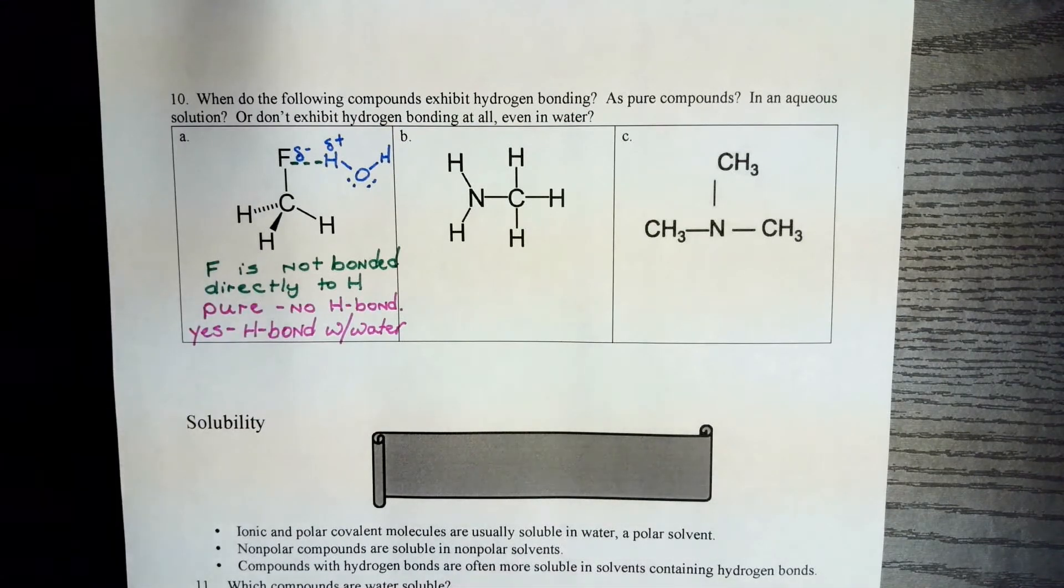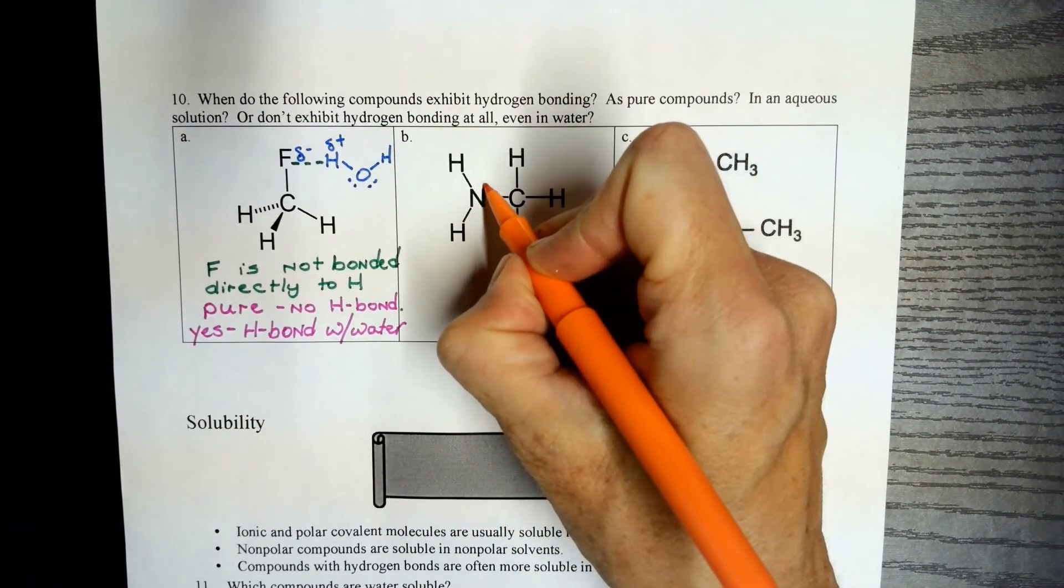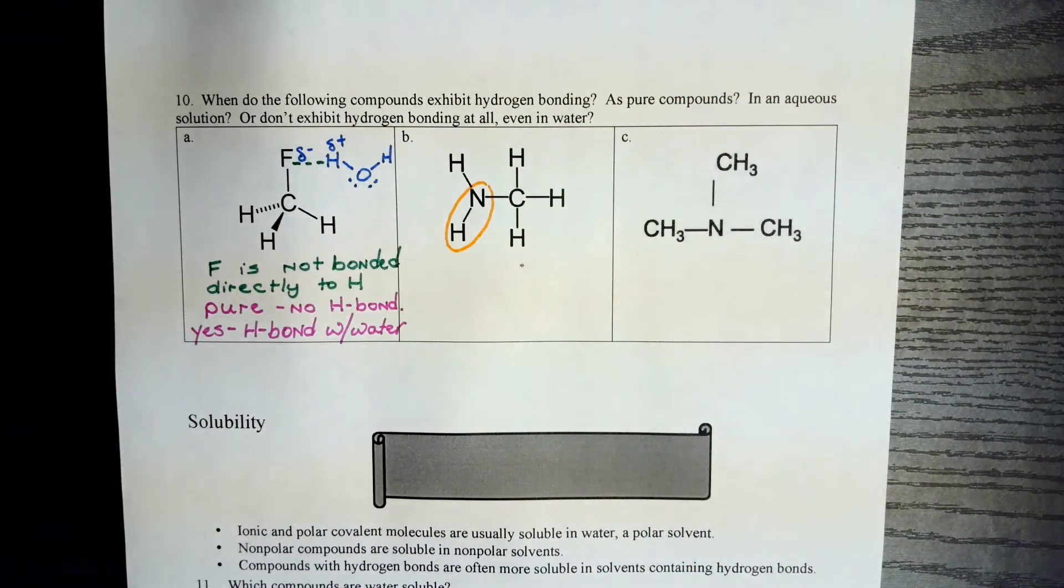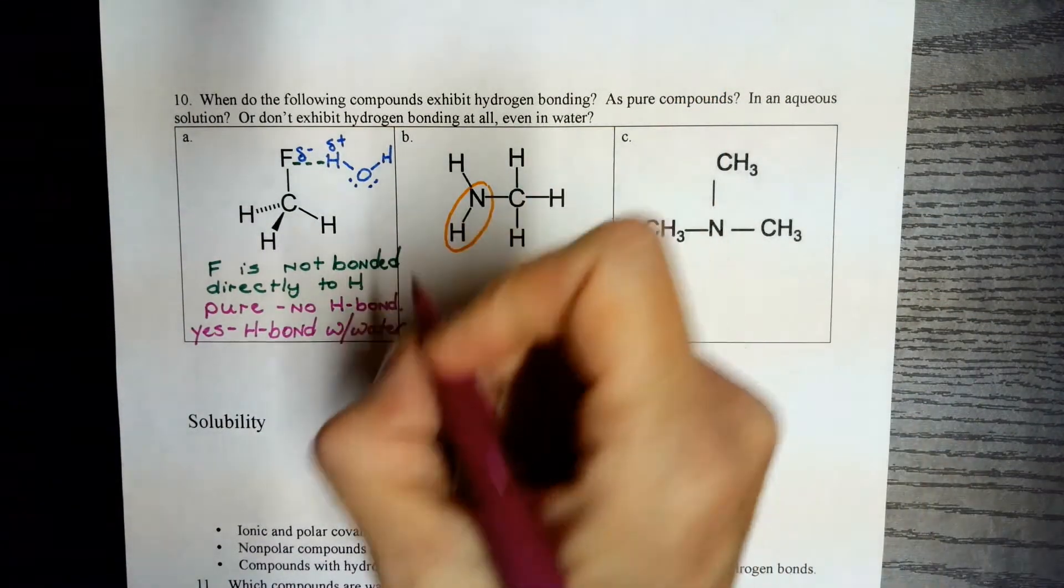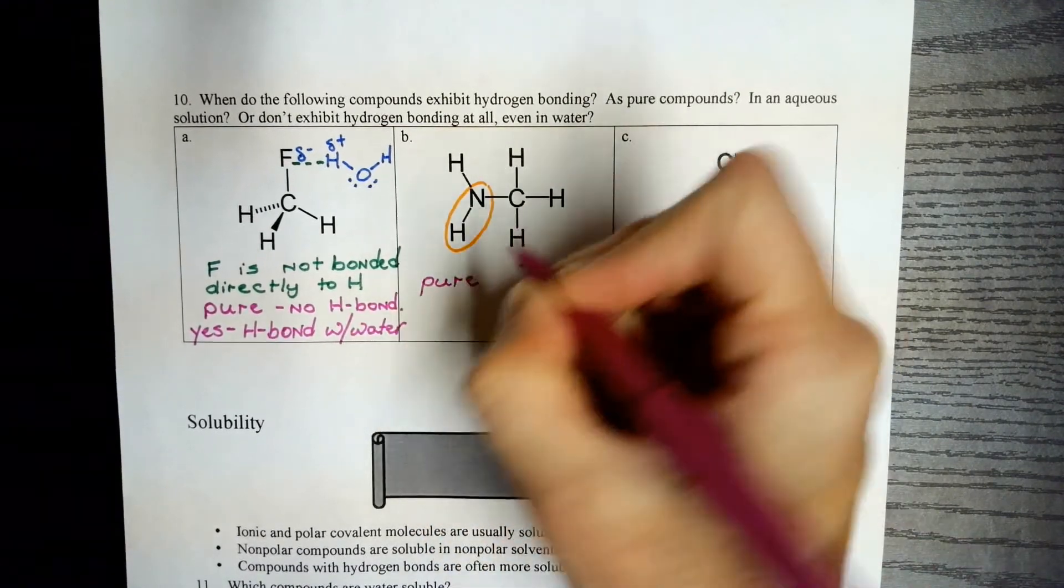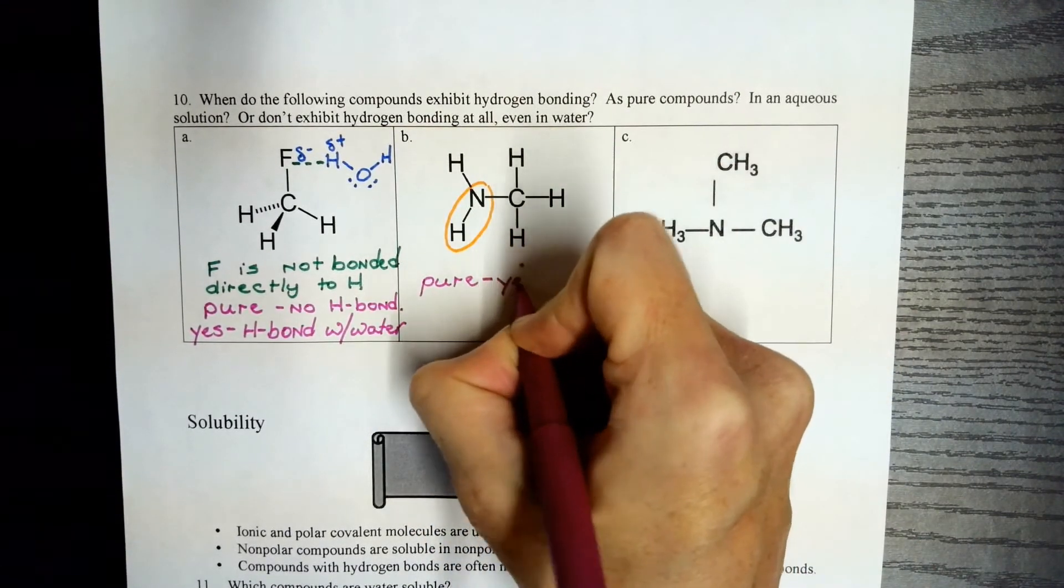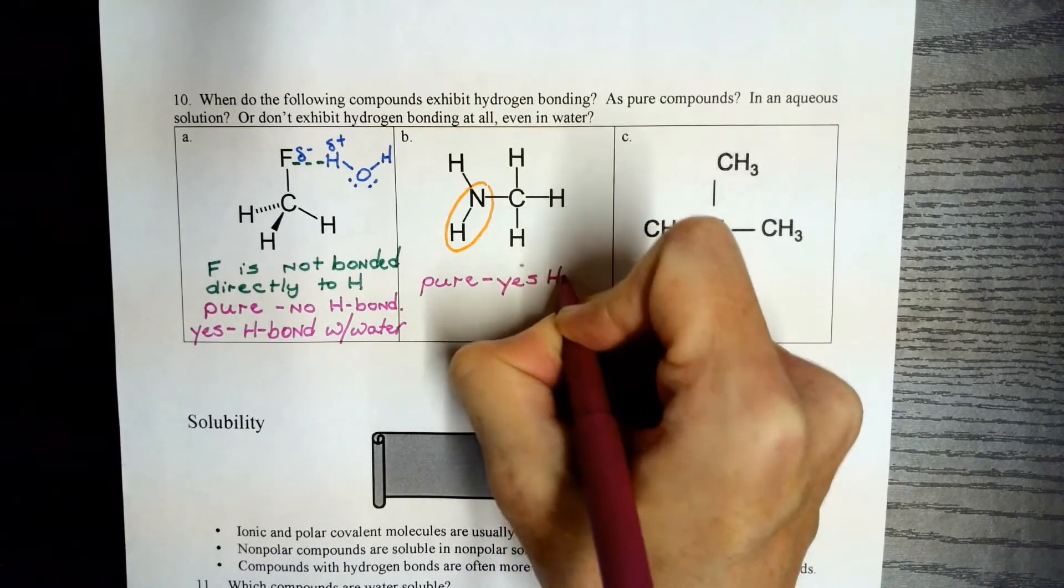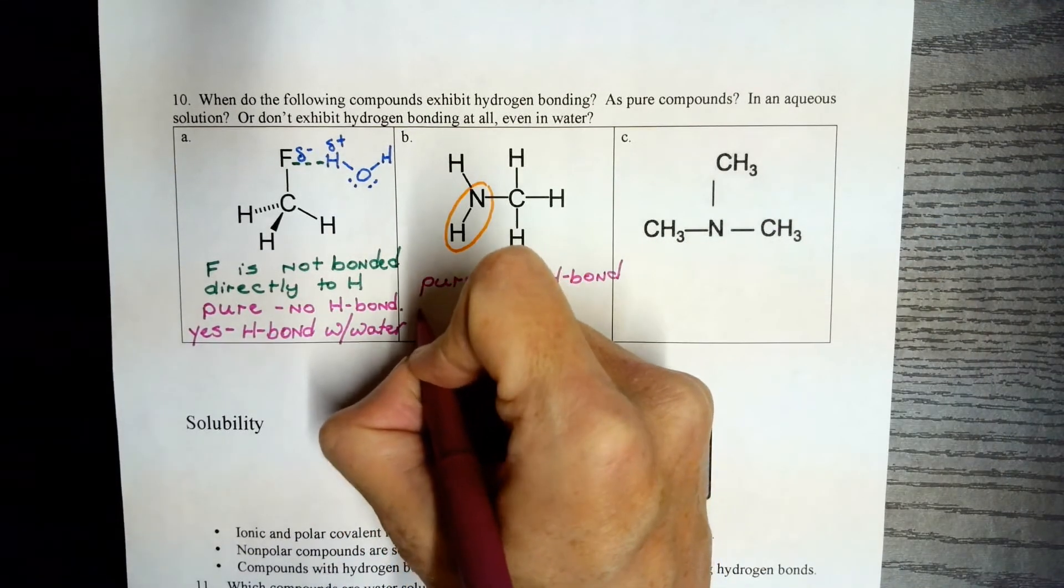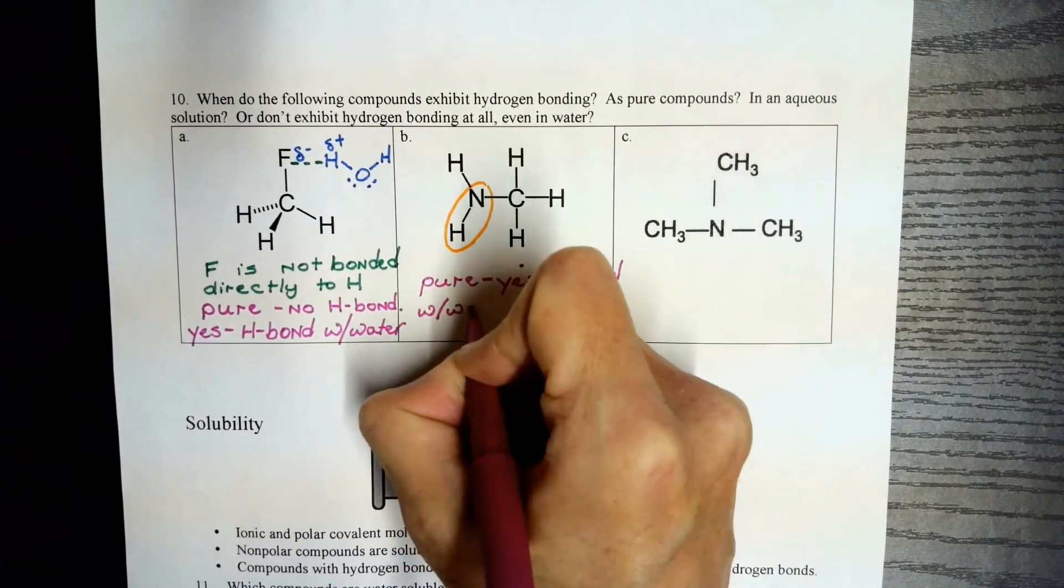In this next example, we have H directly bonded to nitrogen. And that's what we need to see. So as a pure sample, we will see hydrogen bonding. This molecule can hydrogen bond with itself. And with water, it can also hydrogen bond.